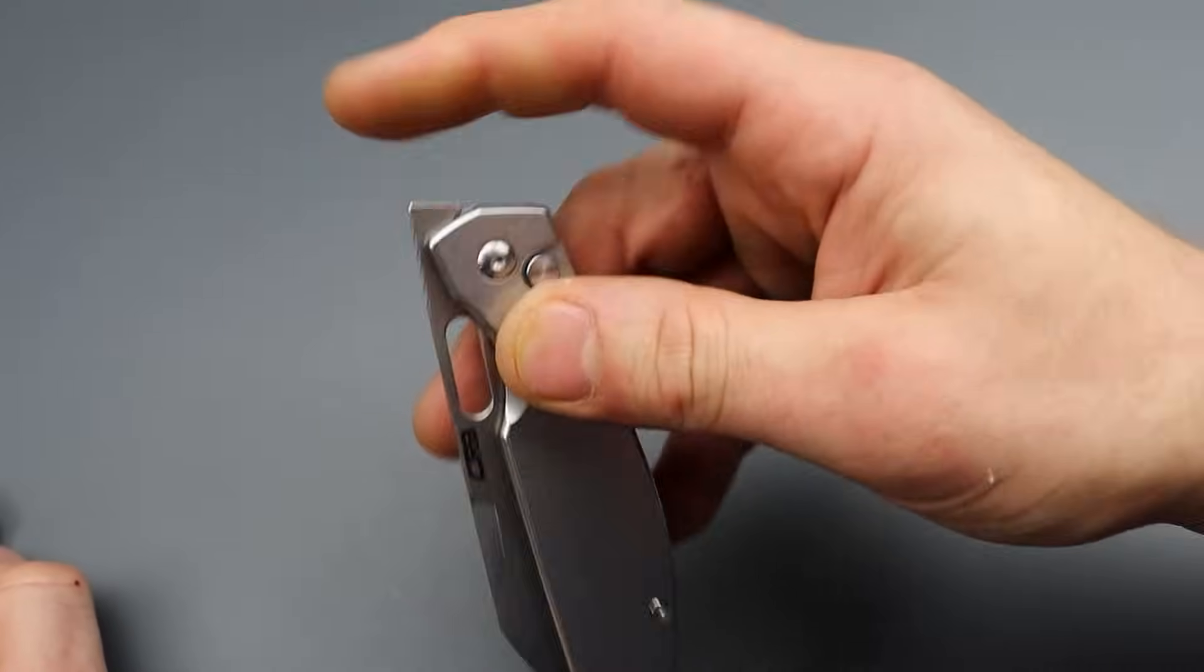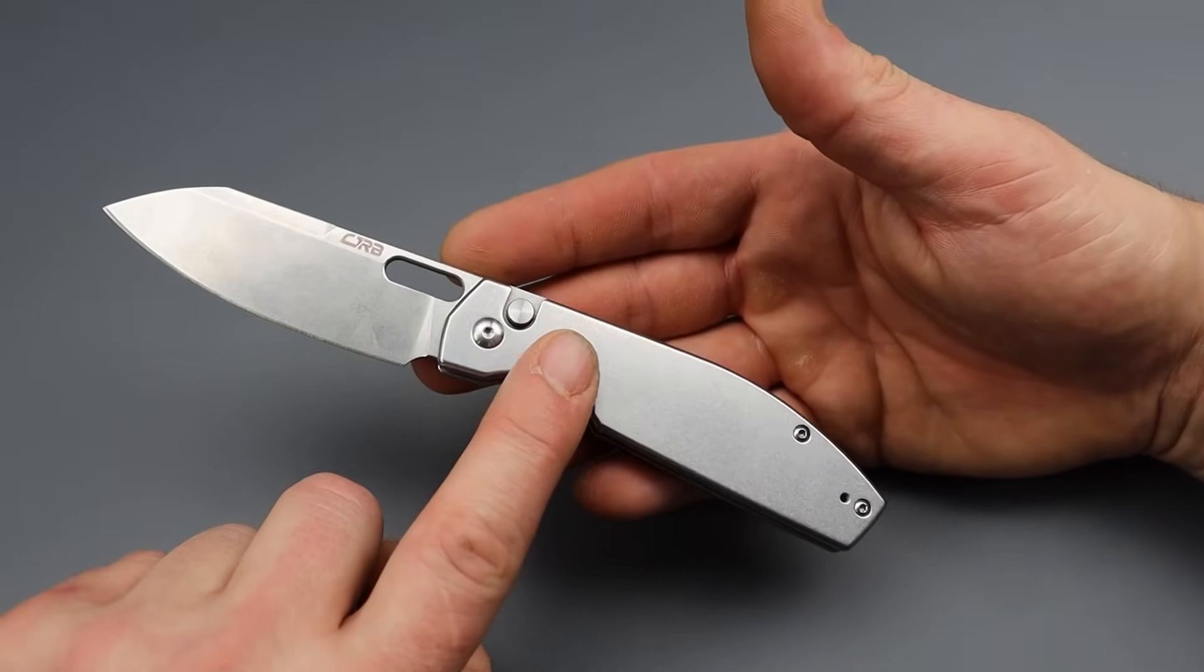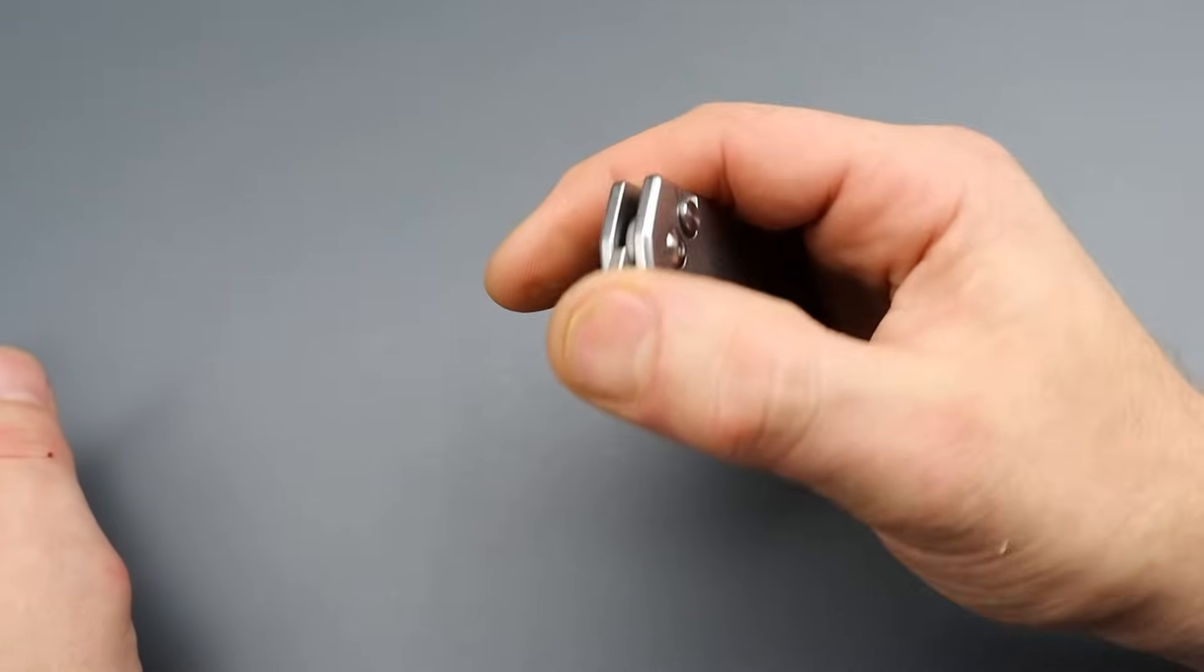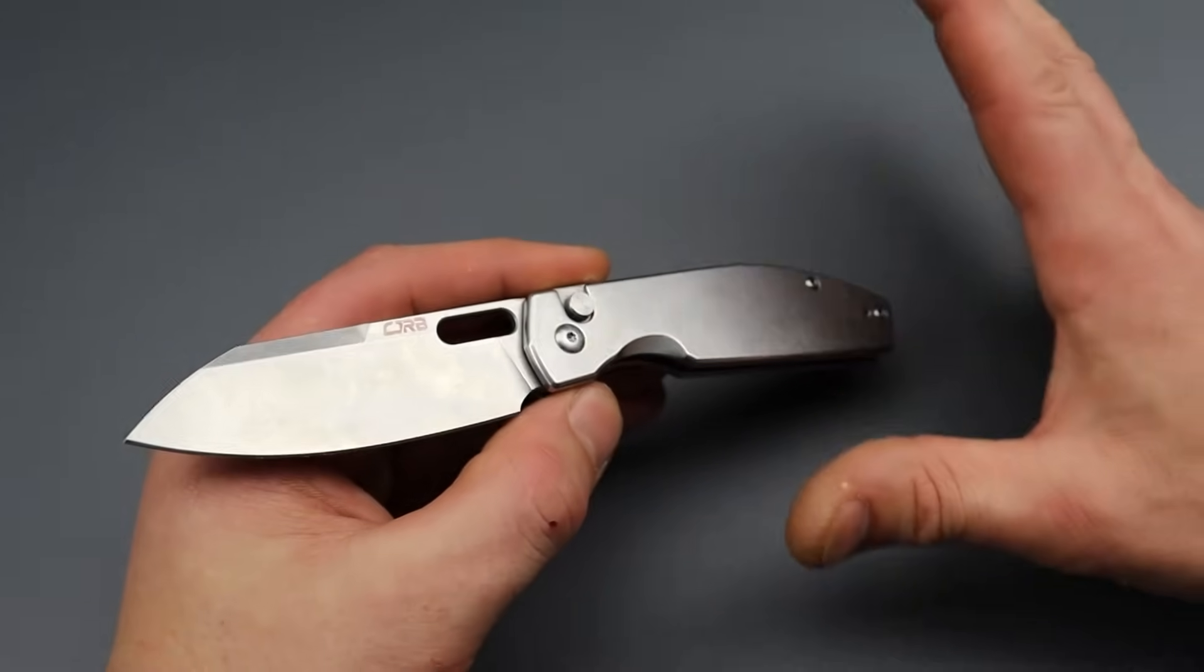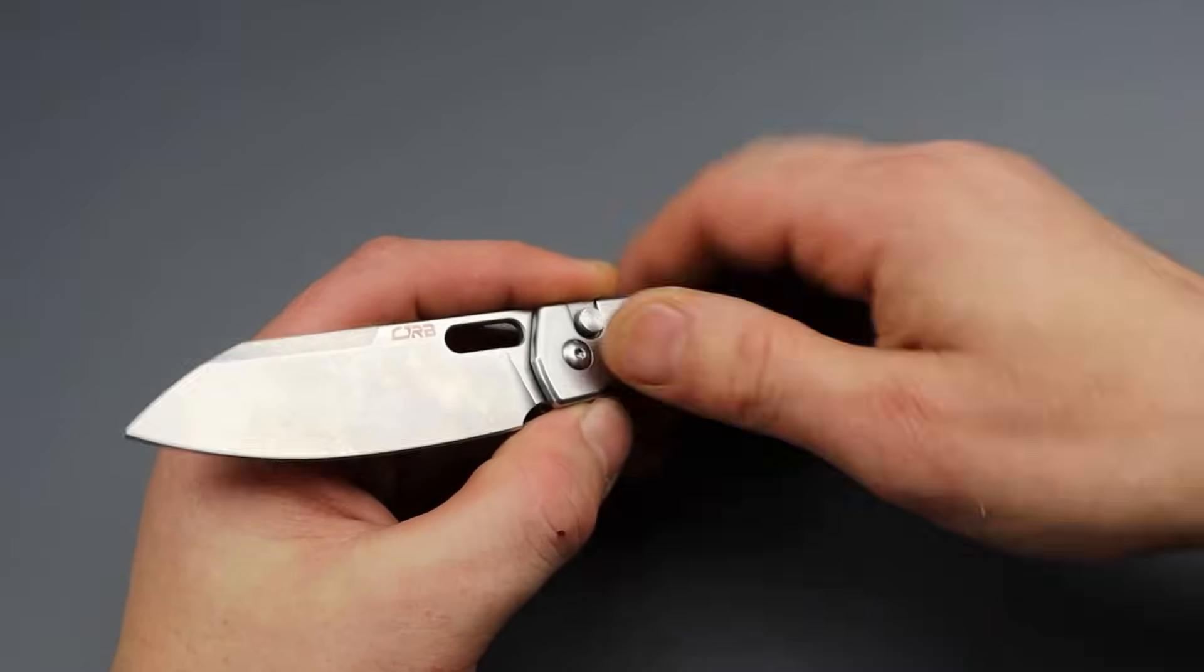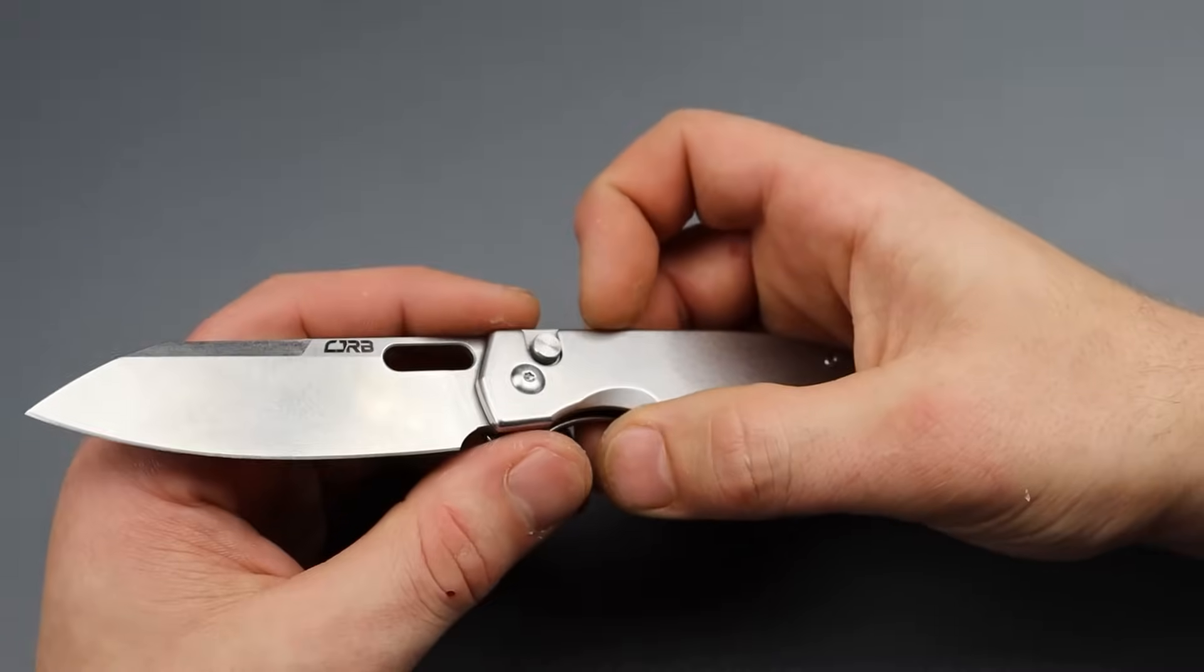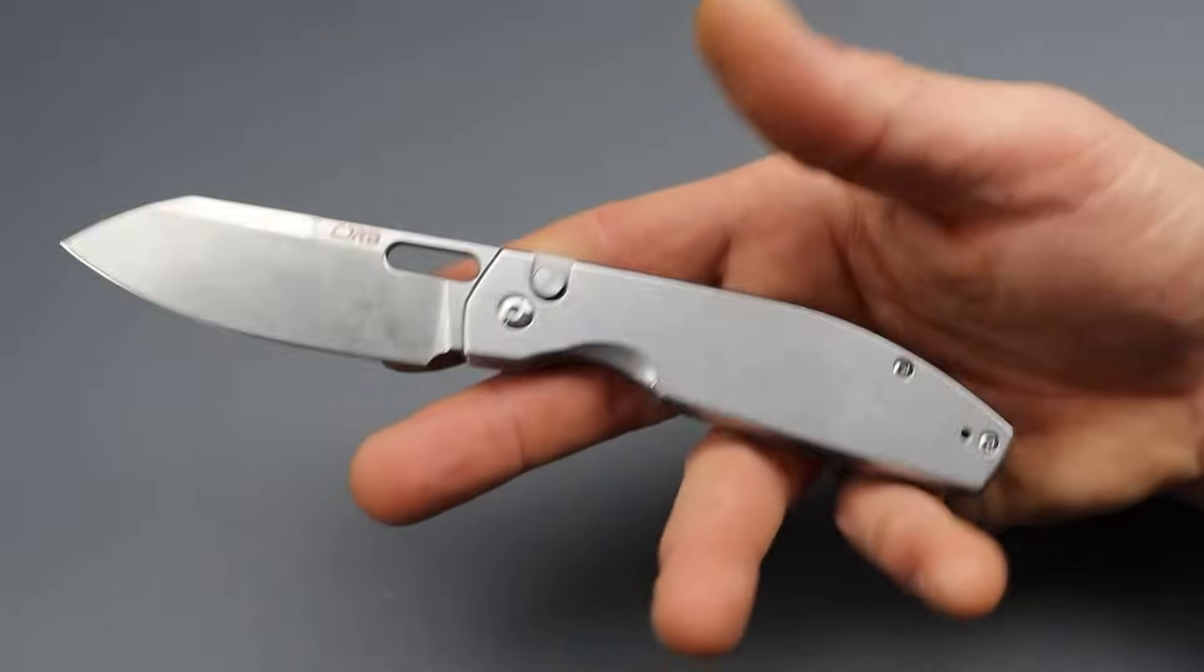Then this one, which is the Echo, they have the titanium version of this for like 70 bucks, 70, $72, something like that. Titanium and ARPM 9 steel for 70 something dollars. That's insane. This knife right here feels like it should be like 70 something dollars. This one's the stainless steel version, but they have the titanium version just like this. The scales are just titanium instead of steel for like 72 bucks.